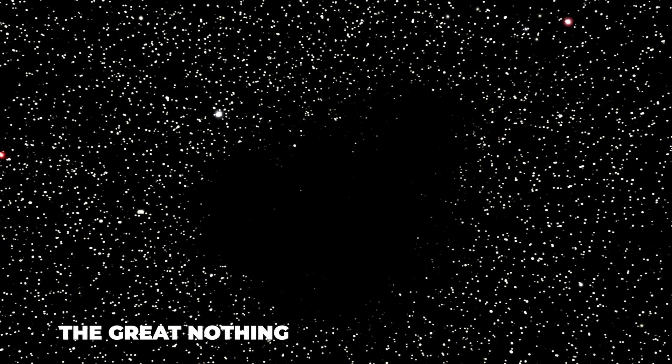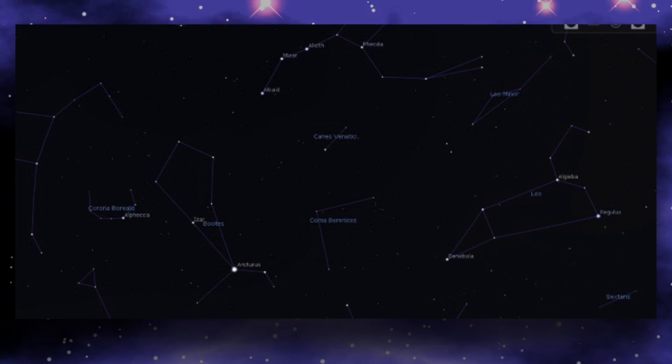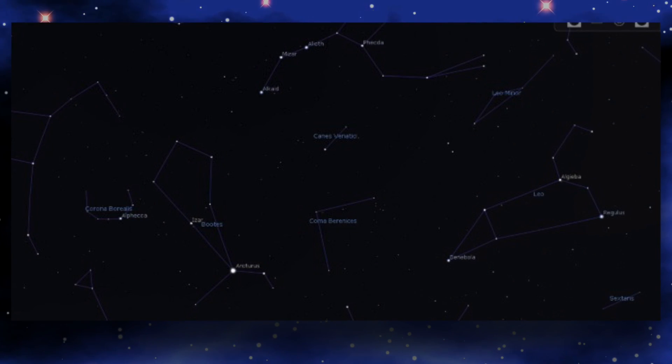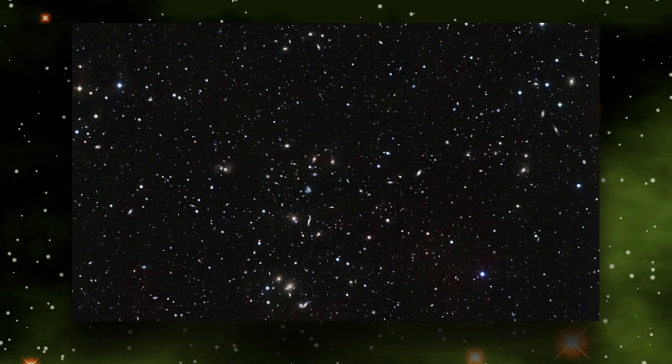Initially known as the Great Nothing, the area later earned the name Boötes Void because it appears to be in the constellation of Boötes, the herdsman who pulls the plow around the northern pole. Part of the void near the edge comprises the Hercules supercluster.